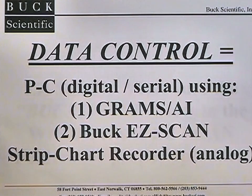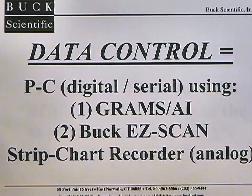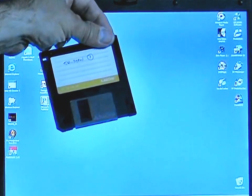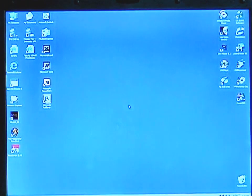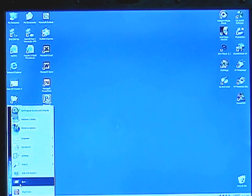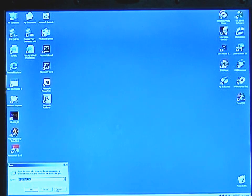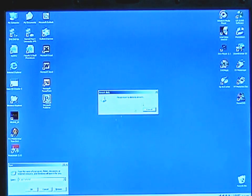The Buck M500 can also be controlled through the Easy Scan fundamental software package included with each instrument. The software must be properly loaded to ensure proper operation and communication with the M500. You will receive two disks for the Easy Scan software for the M500 IR system. Insert disk one into the drive.